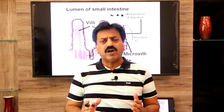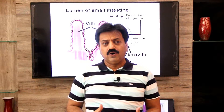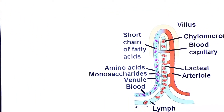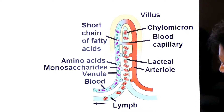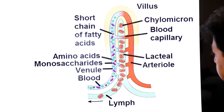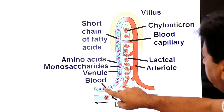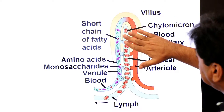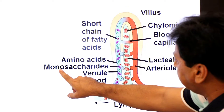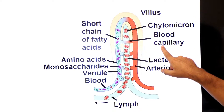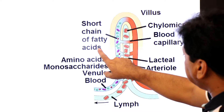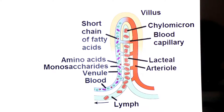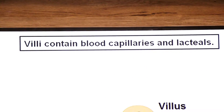Inside the villi, there are blood capillaries and lymph capillaries called lacteals. The end products absorbed by the enterocytes of the villi pass into these blood capillaries. Monosaccharides and amino acids are absorbed by the blood capillaries, while fatty acids and glycerol are absorbed by the lymph capillaries — the lacteals present in the center of each villus.